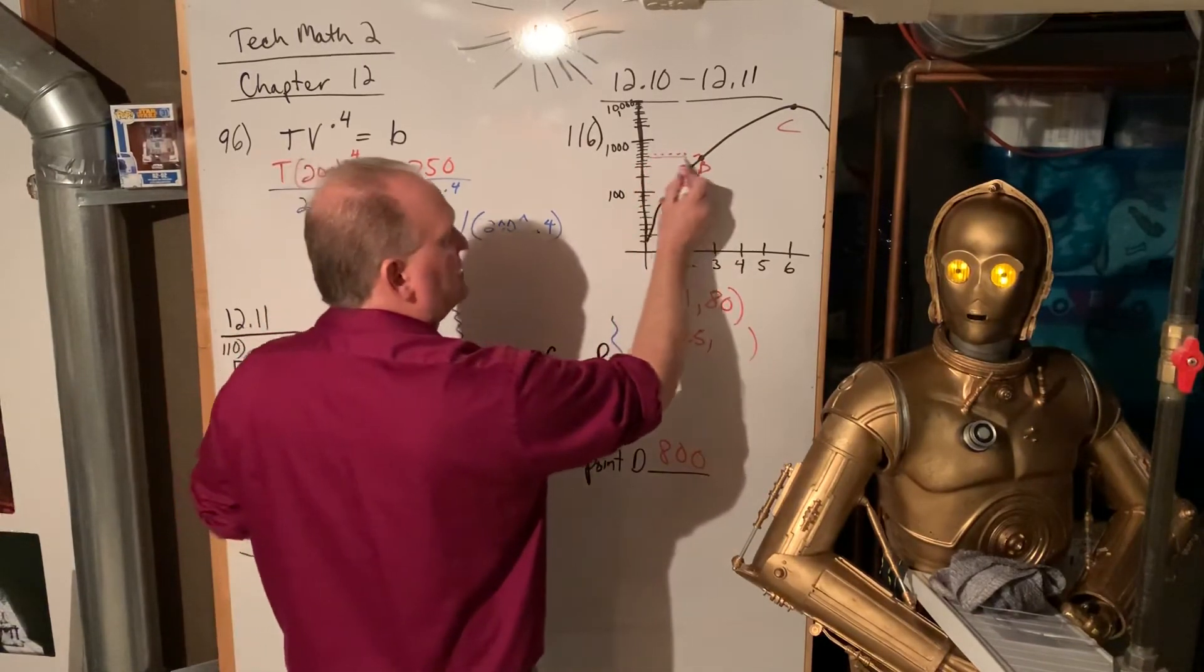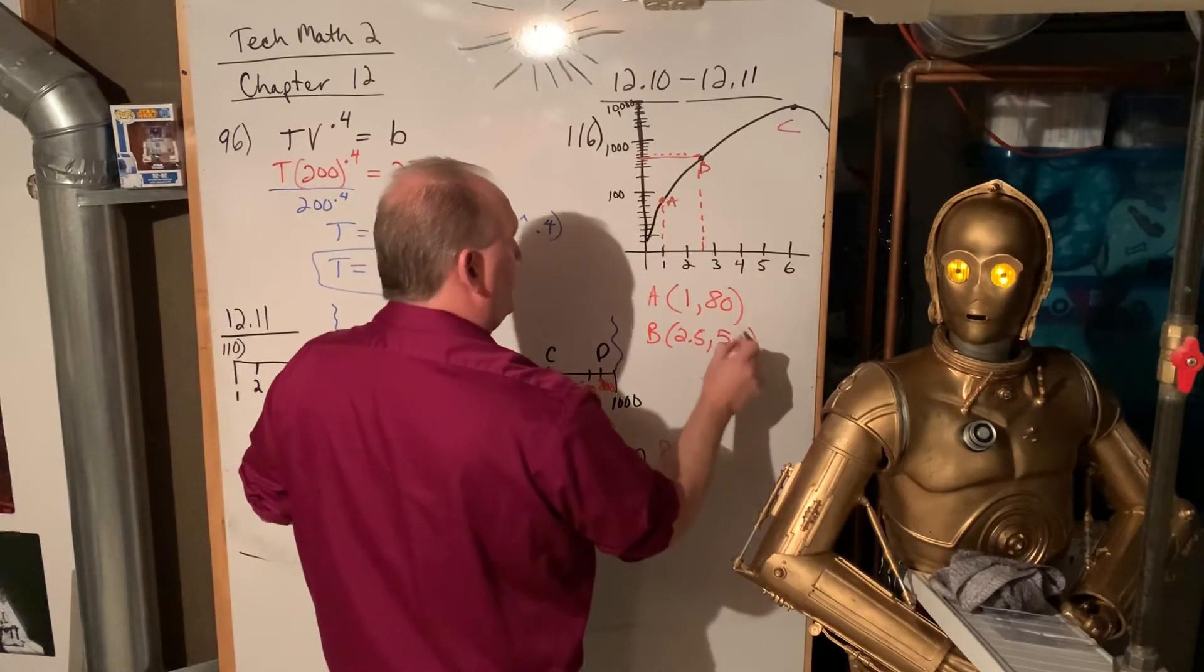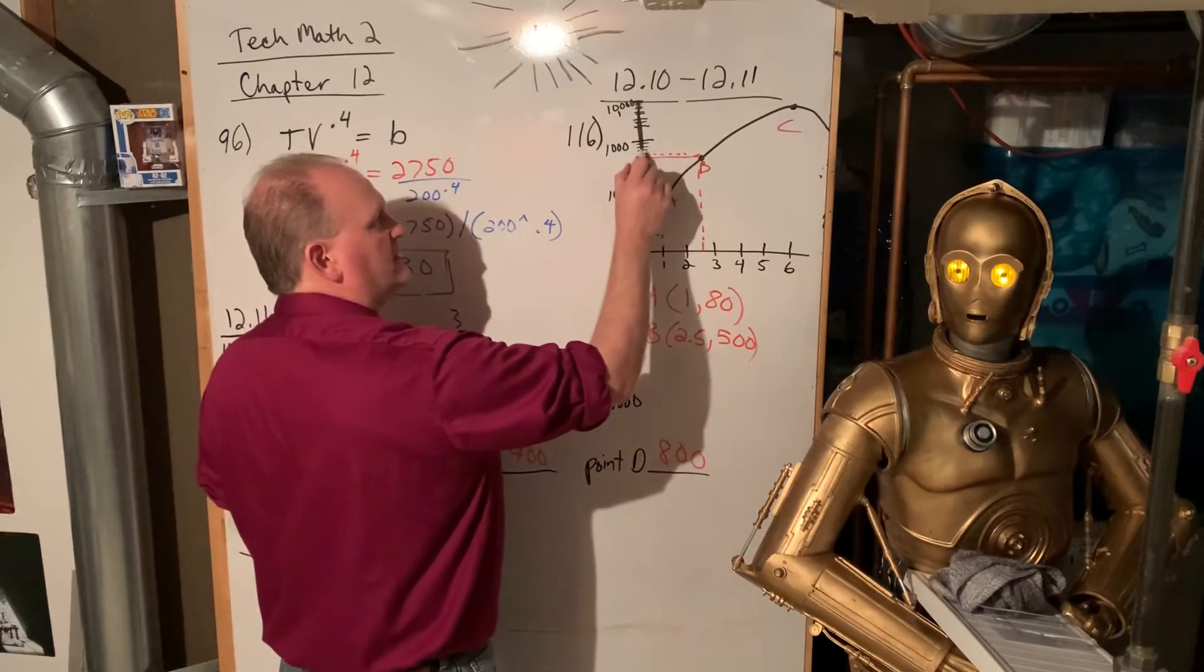That's 500, because that's 100, 200, 300, 400, 500, 600, 700, 800, 900.